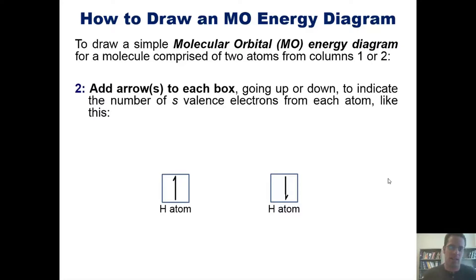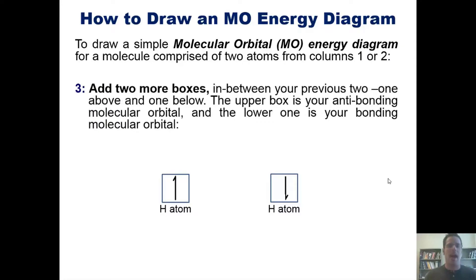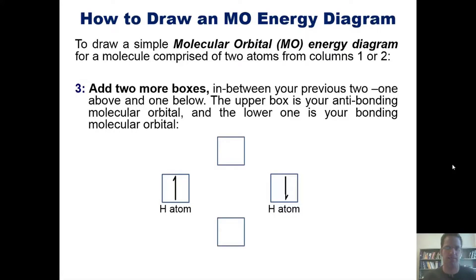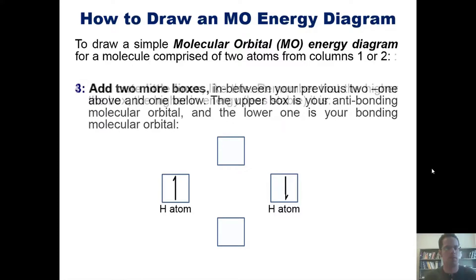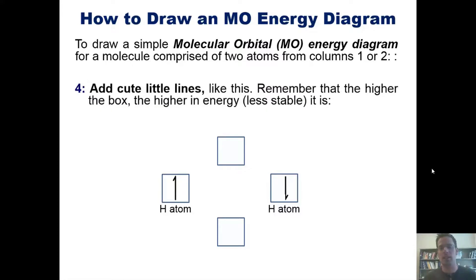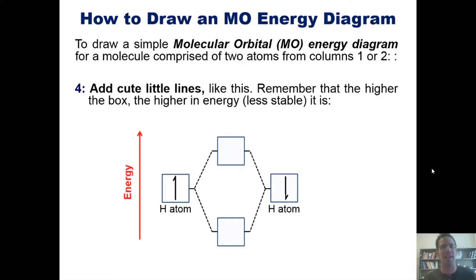For example, one arrow per box represents a single valence electron, such as two individual hydrogen atoms. Step three: add two more boxes in between the previous two — one above and one below. The upper box represents your anti-bonding orbital and the lower box is your bonding molecular orbital. Step four: add connecting lines between the boxes. Remember that the higher the box, the higher in energy and less stable it is. The bonding molecular orbital is lower in energy and therefore more stable than the individual atomic orbitals.